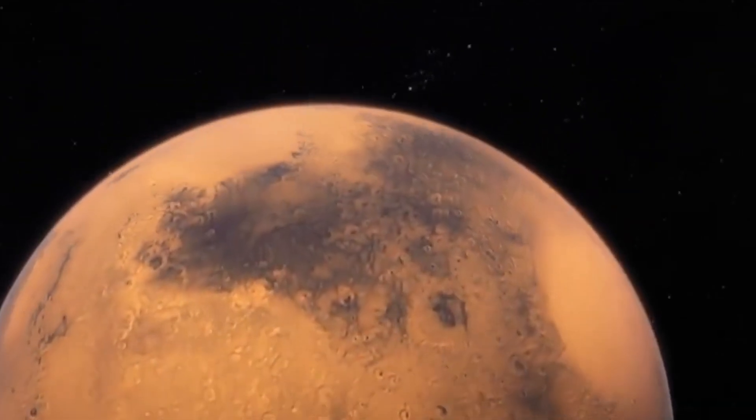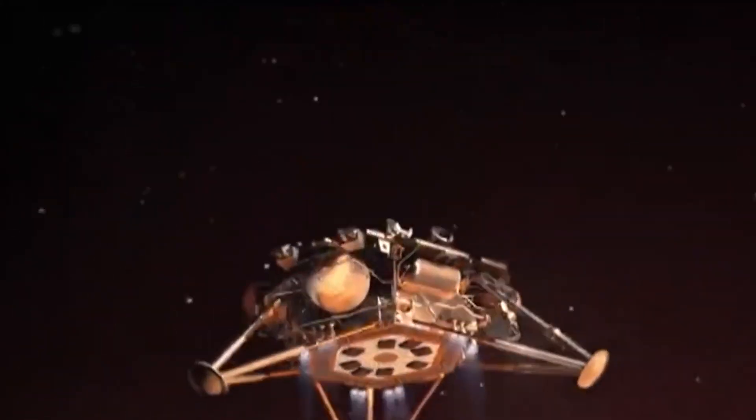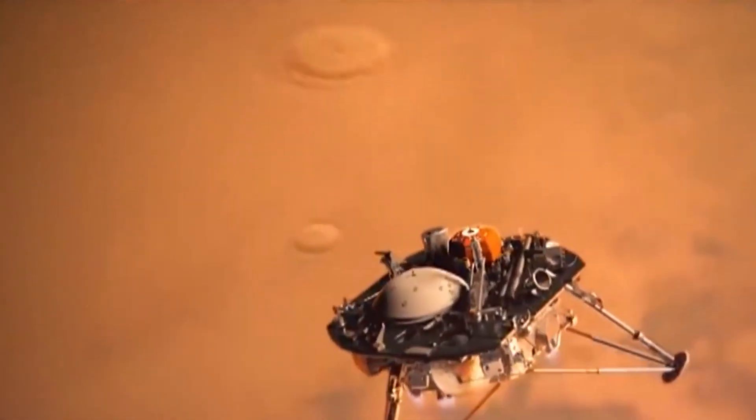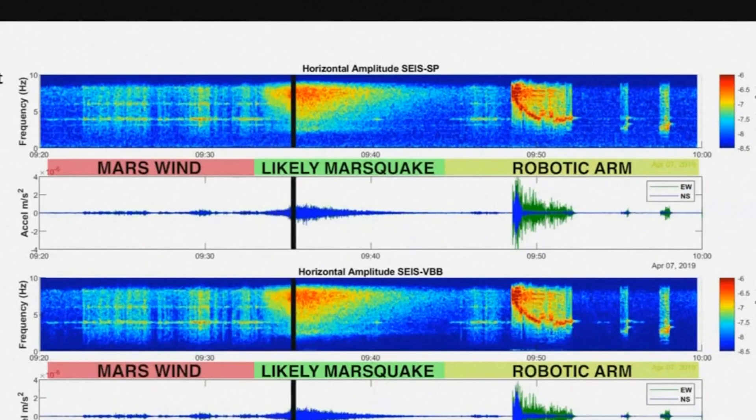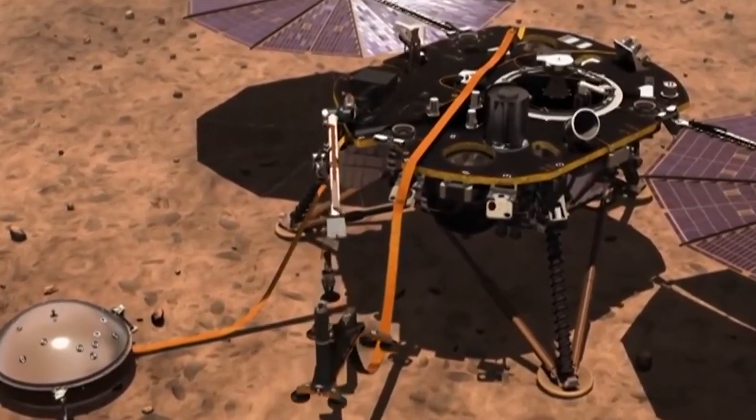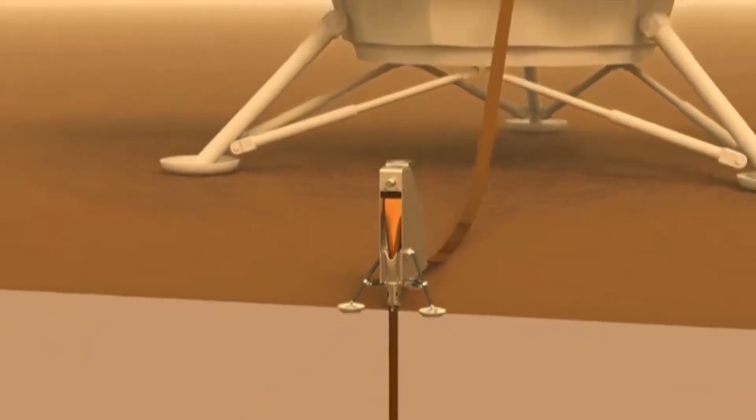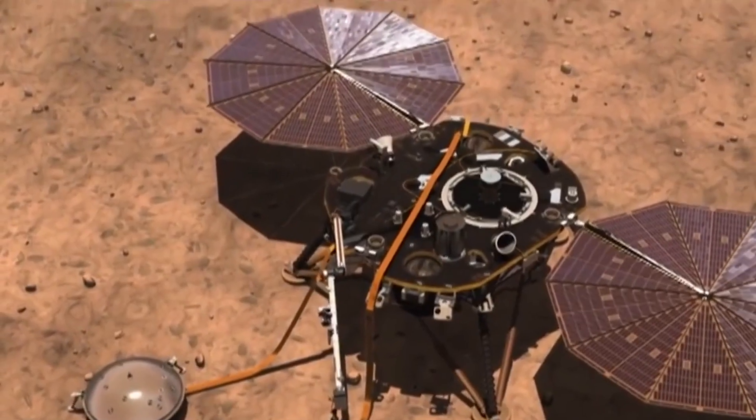They say that Mars is quiet, but even the red planet has its shake-ups. Literally. Scientists call them Marsquakes, and thanks to NASA's InSight Lander, we've heard the subtle rumbles of a restless Martian ground.